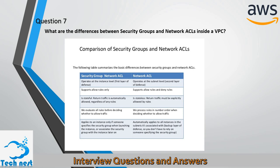A security group applies to an instance only if someone specifies the security group when launching the instance, or associates the security group with the instance later on. A network ACL automatically applies to all instances in the subnets it is associated with.